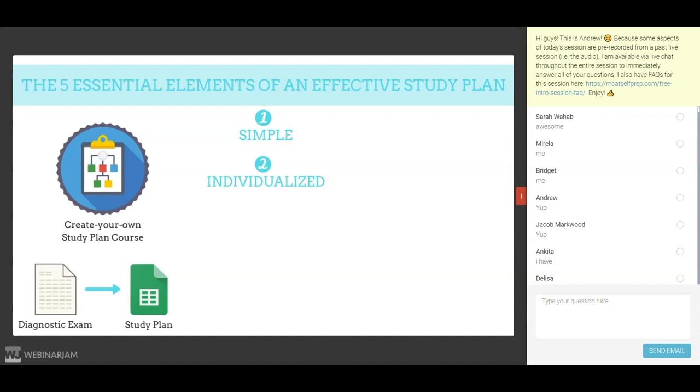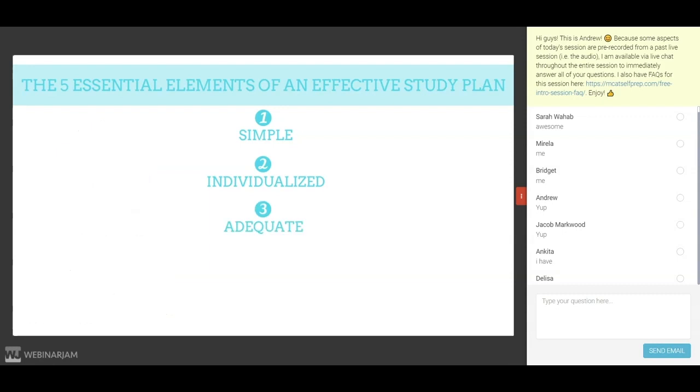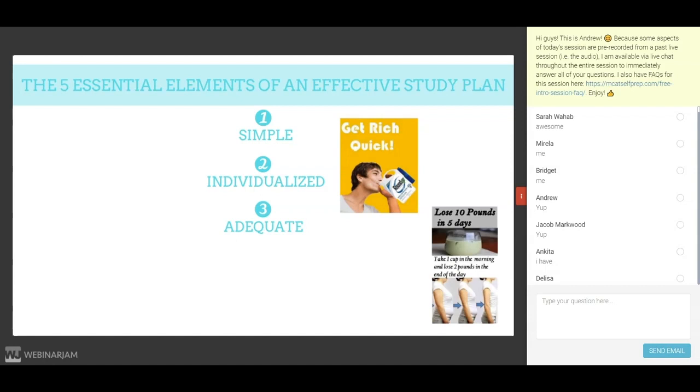The next essential element of an effective study plan is that the plan be adequate. The MCAT is a beast of a test, and studying for the MCAT goes against the popular get-rich-quick or lose-10-pounds-in-five-days advertisements that surround us. Yes, there are people on the internet who will tell you that they got a 520 after studying for just three weeks, and there are countless three-month study plans floating around out there. But remember that these are the exception and not the rule. Following these streamlined study plans may work for exceptionally rare and gifted students, but it will likely not work for you. So, how long should you study for the MCAT?